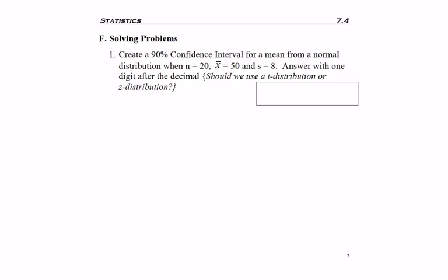Our question is: should we be using the t distribution or the z distribution? We're making a confidence interval for a mean, so we need to stop and ask which distribution we're using. We'll be using the t distribution since sigma is unknown, but we do have a normal distribution.